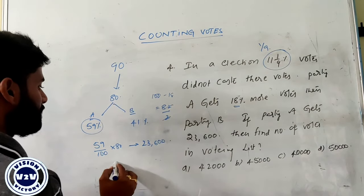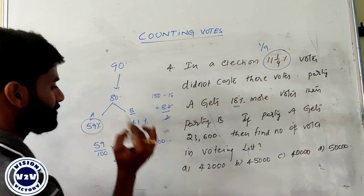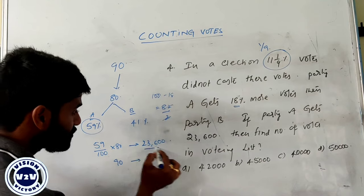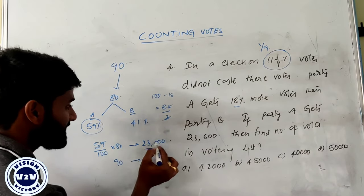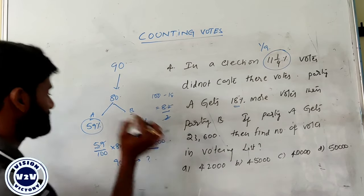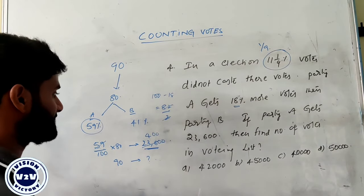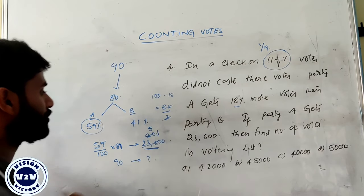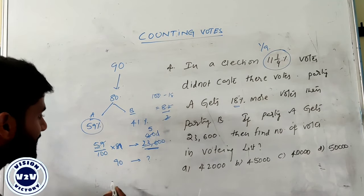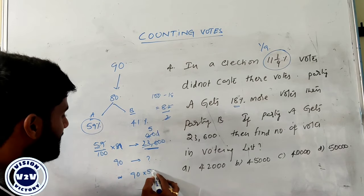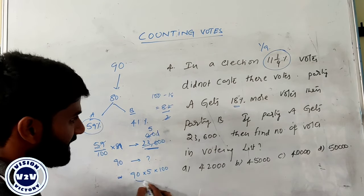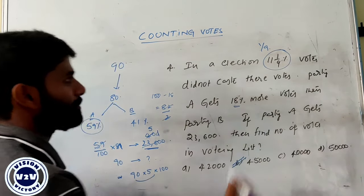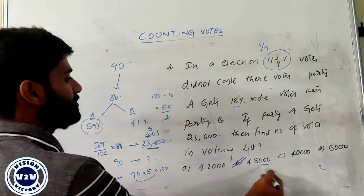Find the number of votes. The number of votes equals 90 units. After cancellation: 59 becomes 236, which is exactly 400 times. Zeros cancel, 8 ones are 8, 8 fives are 40. The value becomes 90 into 5 into 100. 9 fives are 45, 45 into 1000. The value becomes 45,000. So the number of votes in the election is equal to 45,000.